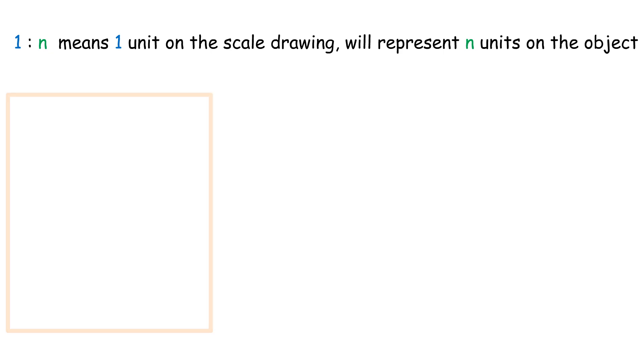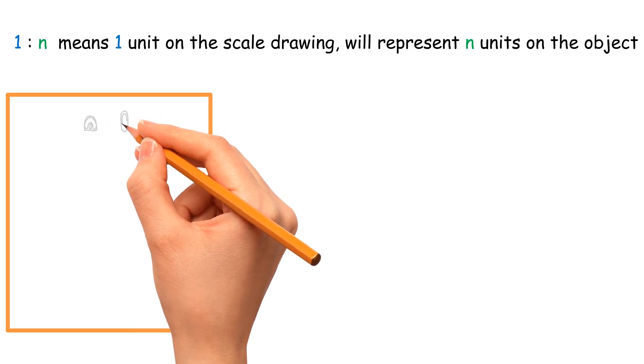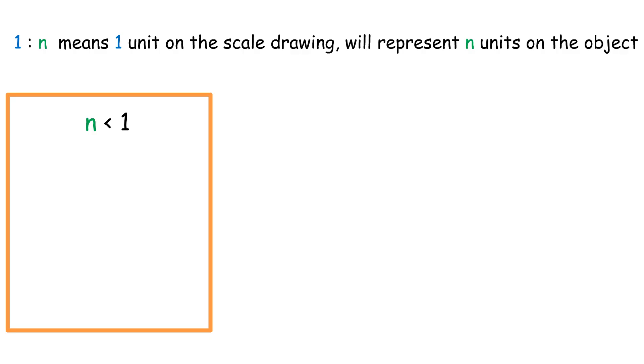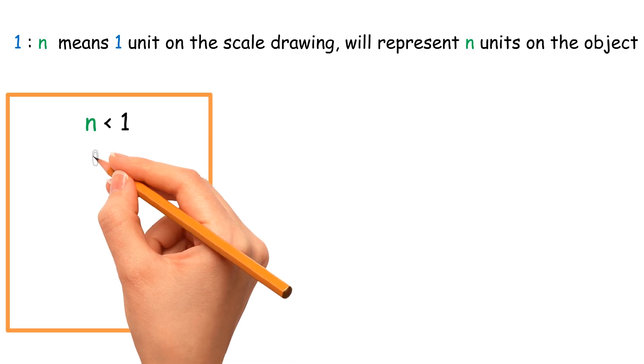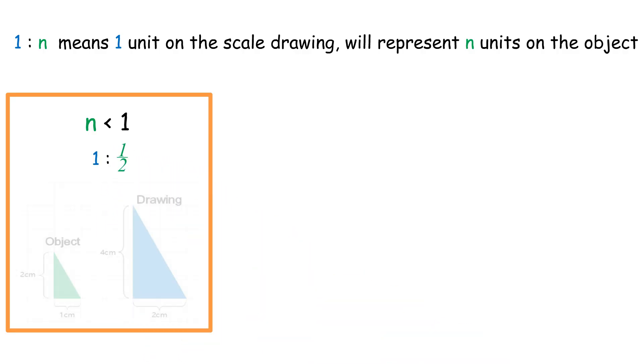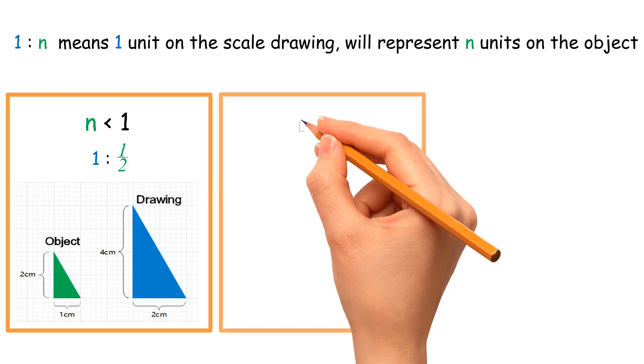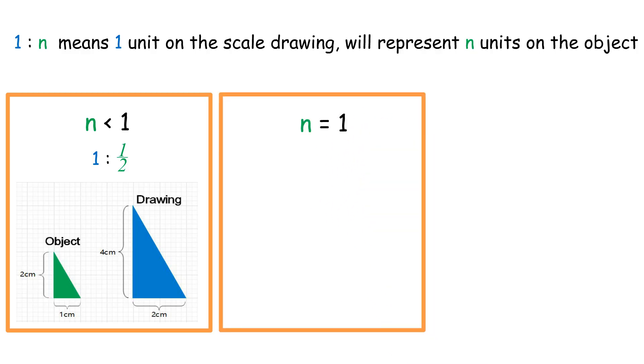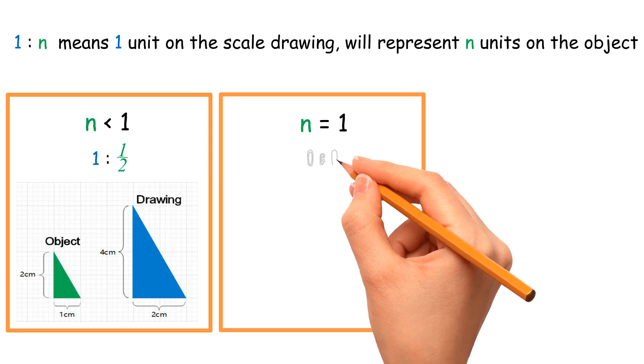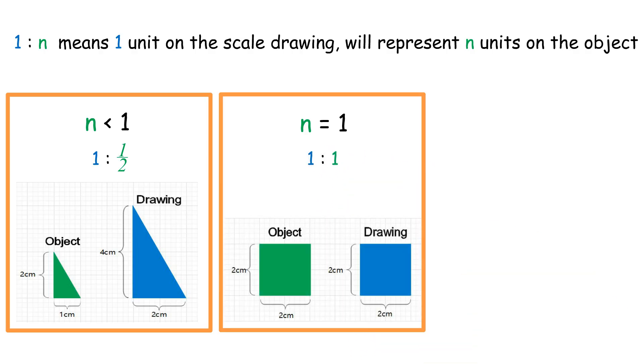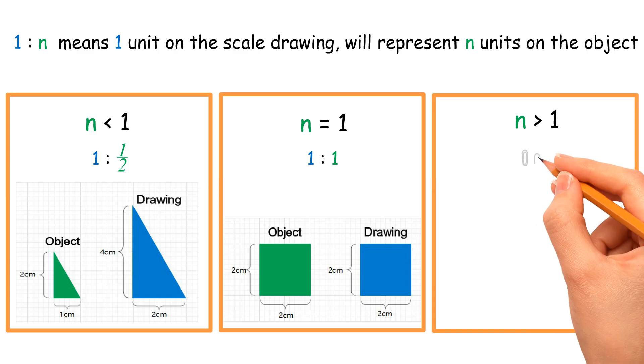There are 3 possible conditions for n. First, n smaller than 1, scale drawing bigger than object. For example, 1 is to 1 over 2. Second, n equals 1, scale drawing same size as object. For example, 1 is to 1. Third, n greater than 1, scale drawing smaller than object. For example, 1 is to 2.